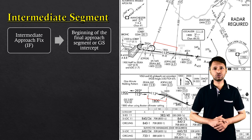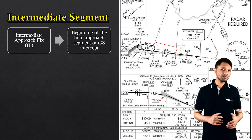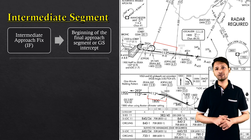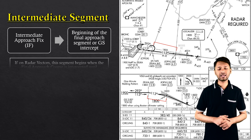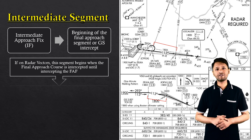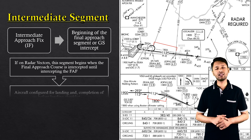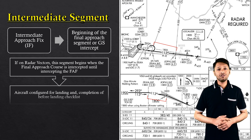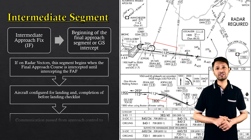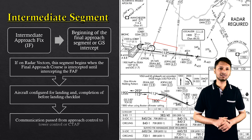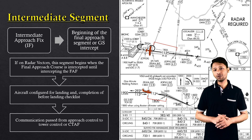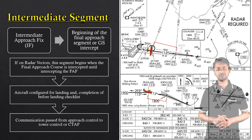The next segment of this precision approach is the intermediate segment. On a precision approach, this segment begins at the intermediate approach fix, extending to the final approach segment or the interception of the glide slope. If on ATC radar vectors, this segment begins when the final approach course is intercepted until the interception of the final approach fix. On this segment, the aircraft must be properly configured for landing and the before landing checklist completed. This is also when communication is usually passed from approach control to tower control or the common traffic advisory frequency.